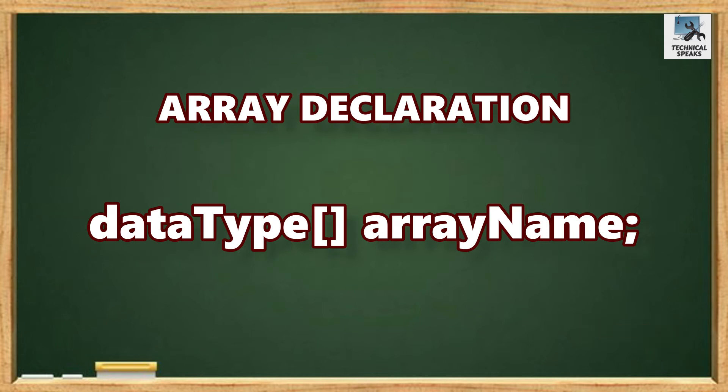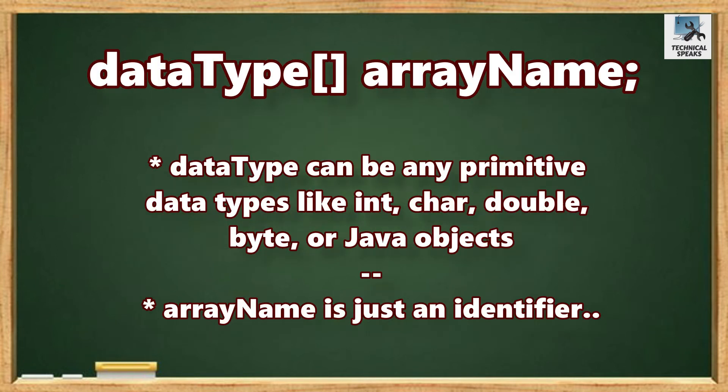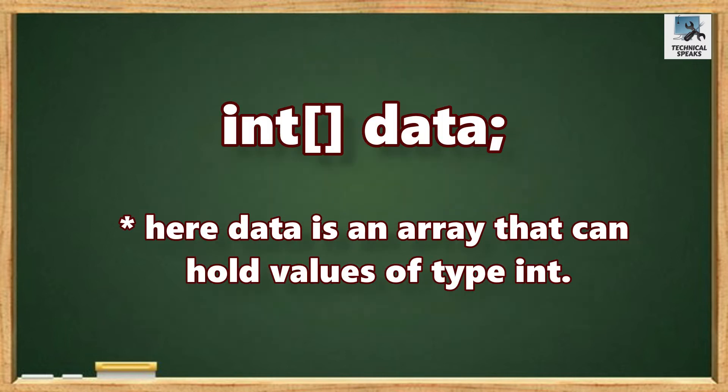In Java, we declare an array like: data type, square braces, array name. Data type can be any primitive data types like int, char, double, byte, or Java objects. Array name is just an identifier. For example,